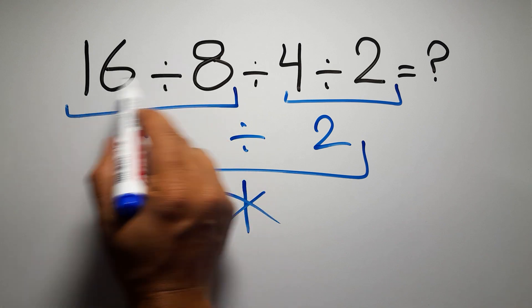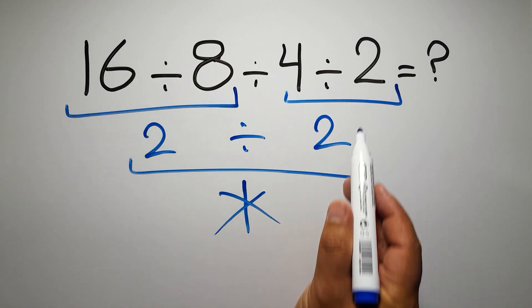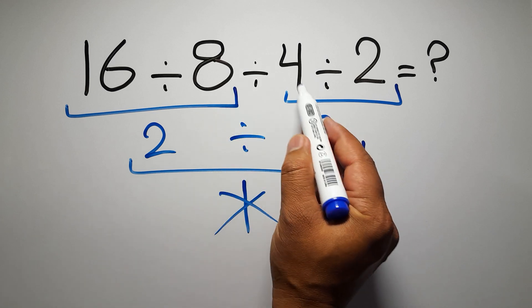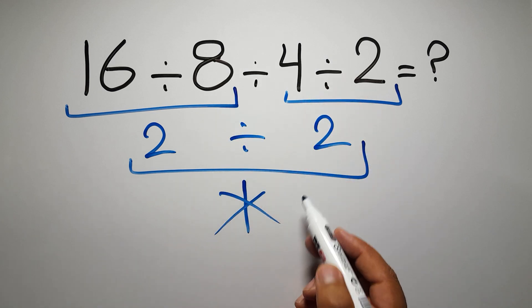So first we have to do this division, then this division, and finally this division. If we do this division before this division, it is wrong.